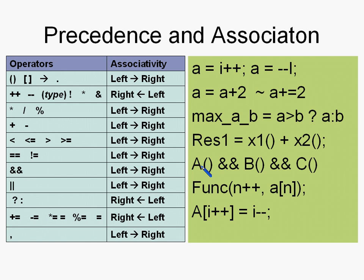There's another dangerous kind of expression where C does not guarantee the outcome — the behavior is compiler-dependent. Anything that depends on the compiler for its execution is best avoided. With that, I'm done with the lessons on operator precedence and associativity. In the next lesson, I'll talk about something different.